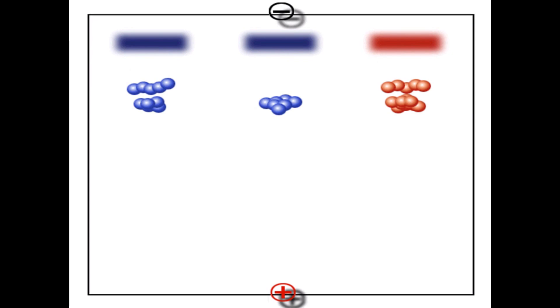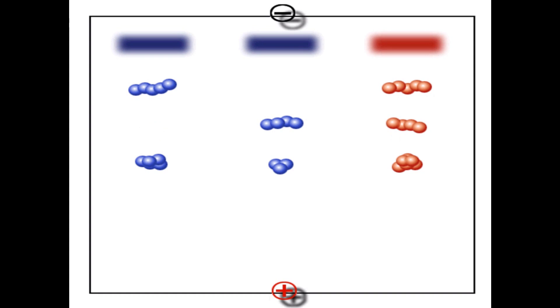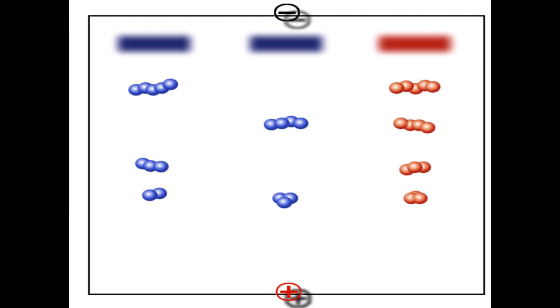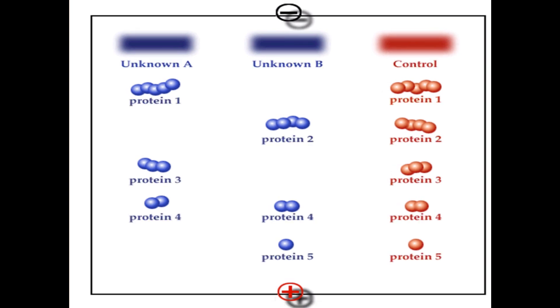Western blotting allows one to visualize antibodies directed against each viral protein. For this reason, it is a confirmatory test for a positive HIV ELISA. In an HIV Western blotting, proteins are electrophoresed into a gel. As the proteins migrate through the gel, they are separated based upon size and charge. Characteristically, smaller proteins migrate through the gel faster than the larger proteins.